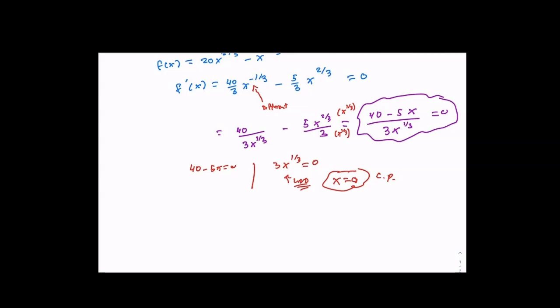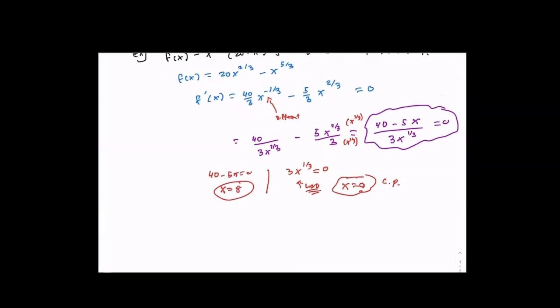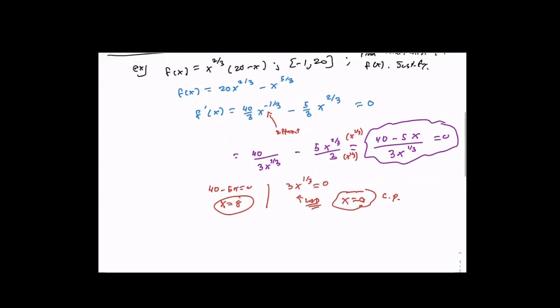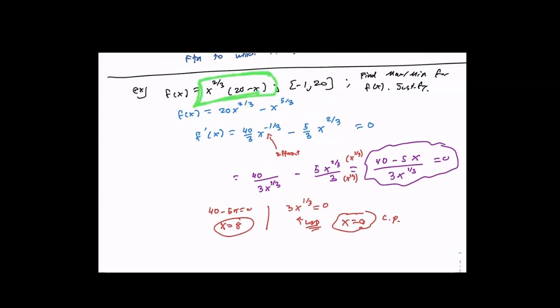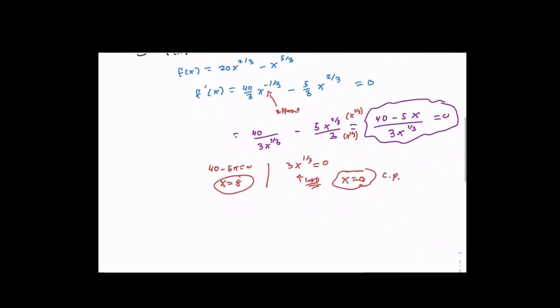At x equals zero, the derivative is undefined — but that's okay because x equals zero is inside my interval, and f is still continuous there. What happens at x equals zero is that the function is going to have a sharp turn because the derivative is undefined, but the original function is continuous.